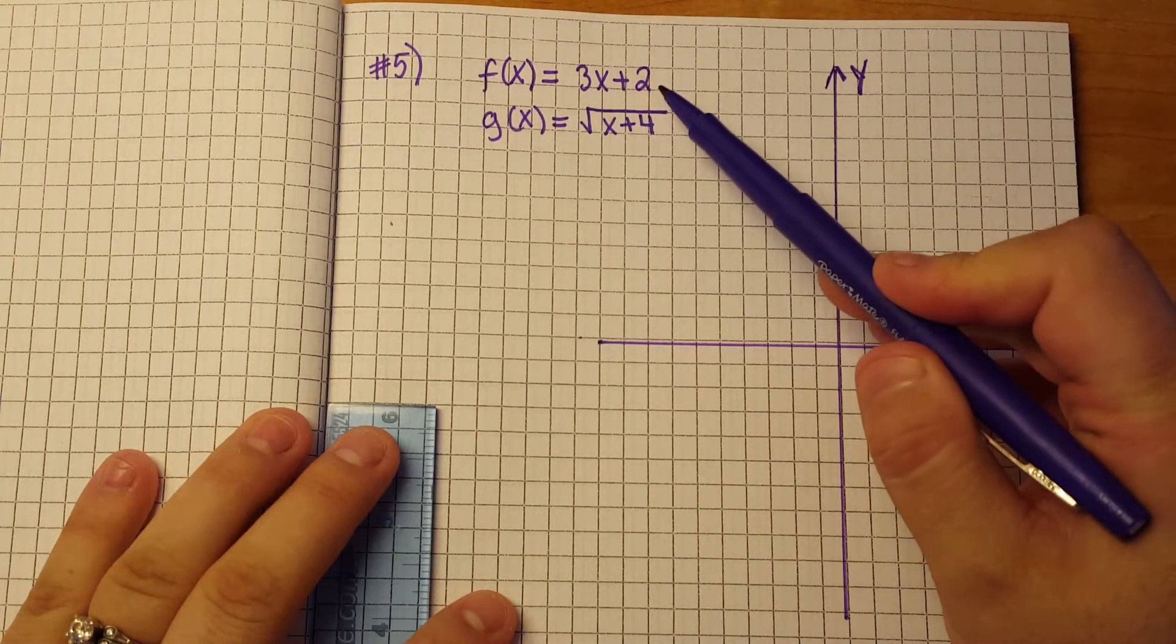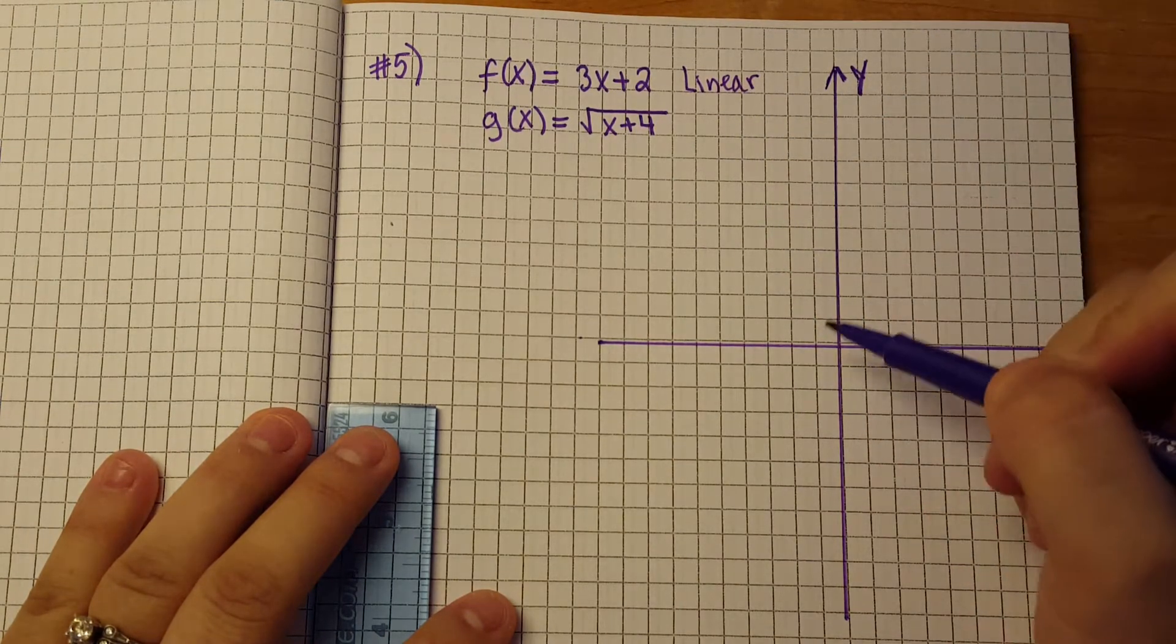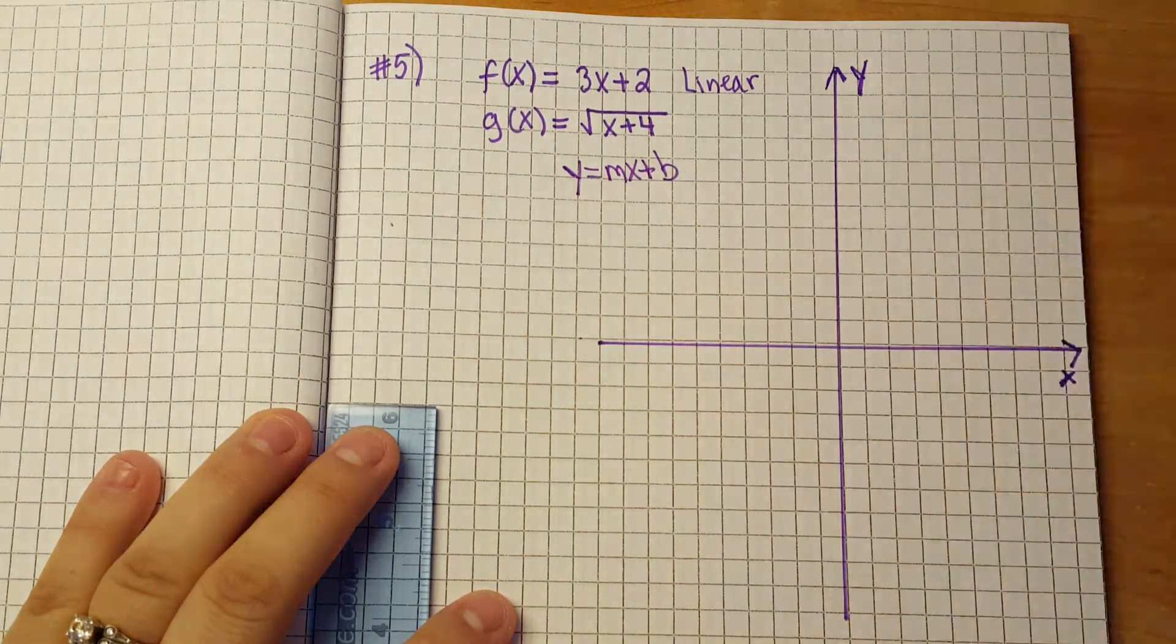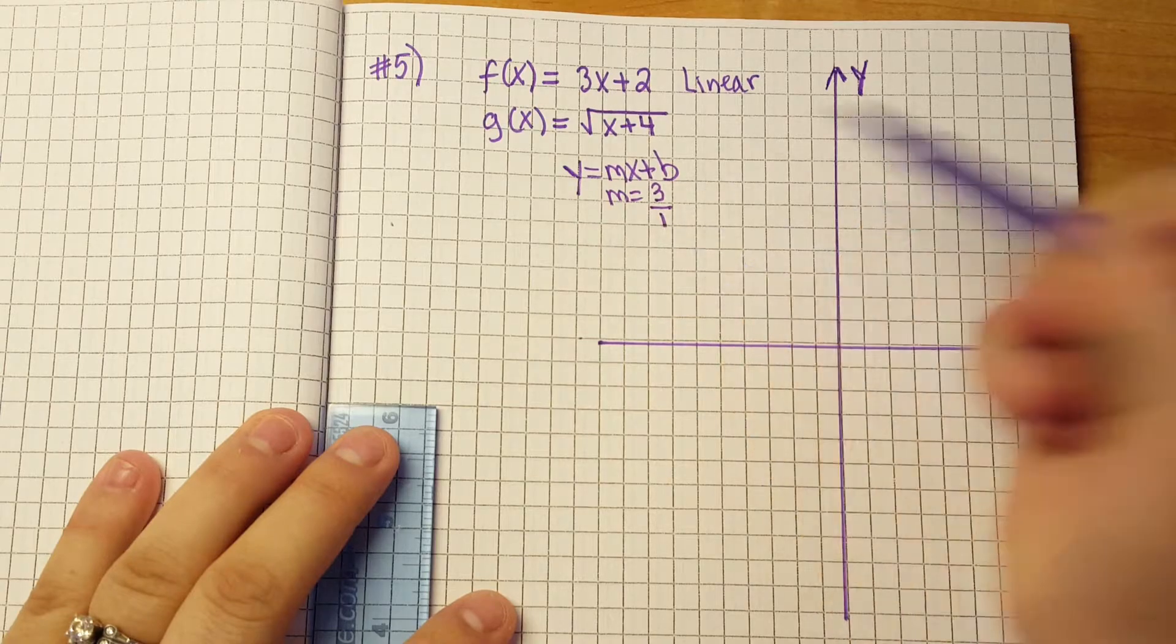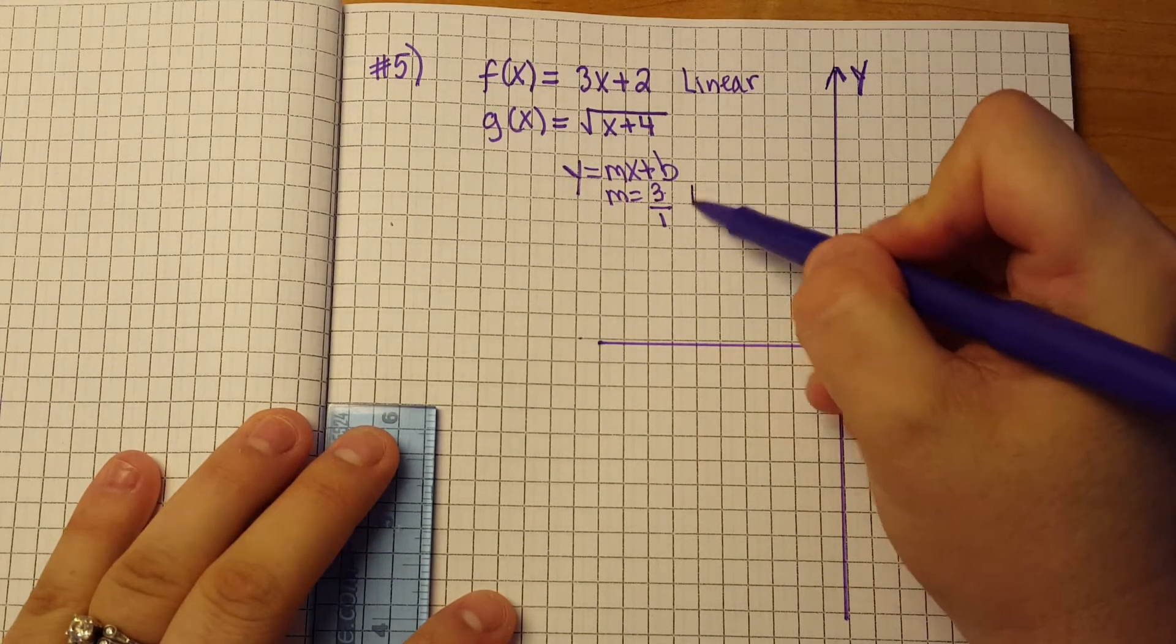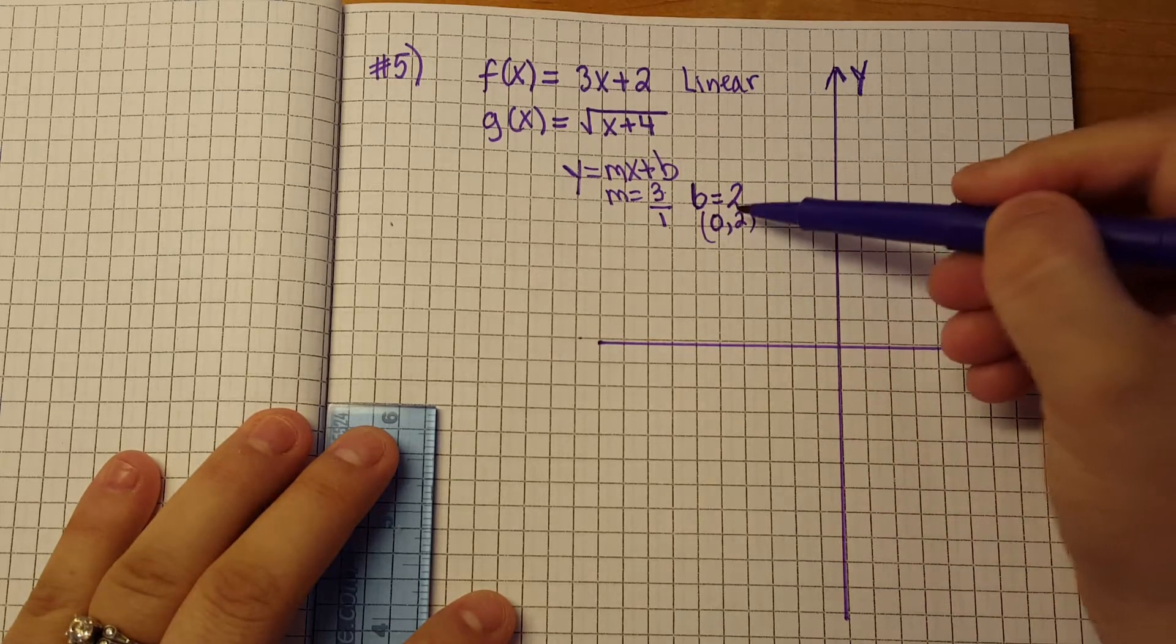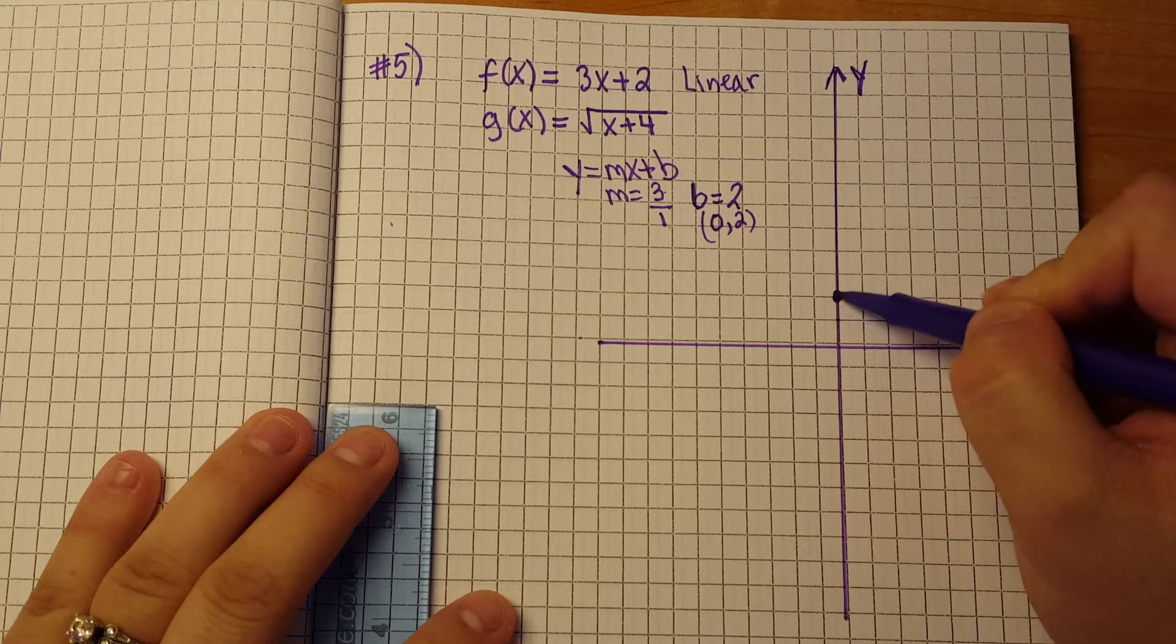Right, to graph, we should recognize when we look at f of x this is a linear equation. At this point we should be able to recognize that is a linear equation. Linear equations means you have y is equal to mx plus b. This is one where our m in this particular case is 3 and we're going to put that over 1 because our slope is rise over run. Our b which is our y intercept is 2. So we know that point is at 0, 2 and we always start with the y intercept. So we're going to go to our y intercept. Put a dot on 0, 2 here.